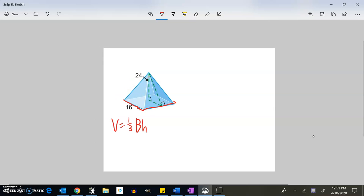The area of the base is 16 by 16, so that's 16 squared. The height is 24, and it's going to be one-third of that because if I just did 16 squared times 24, that would be for the prism.